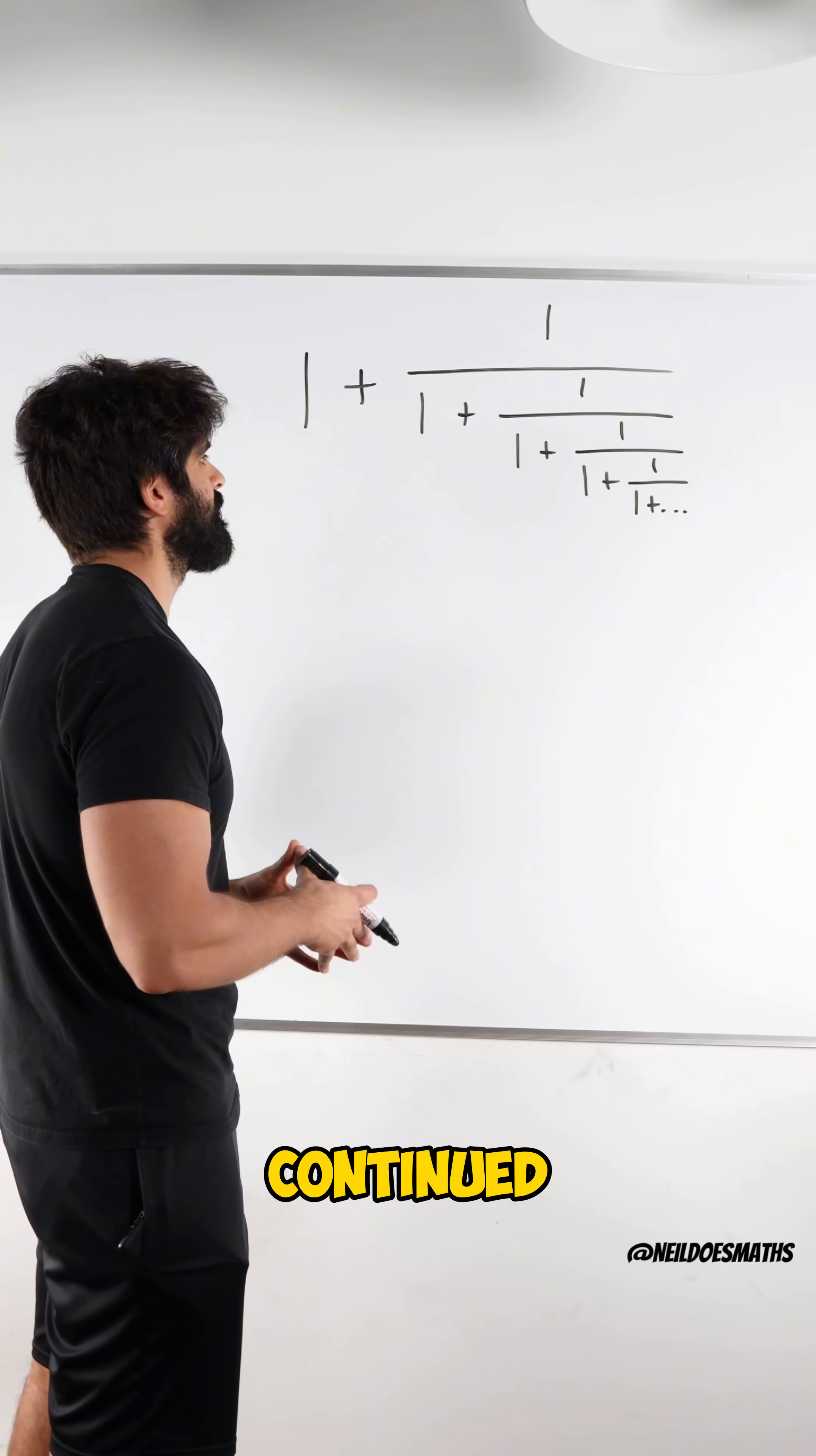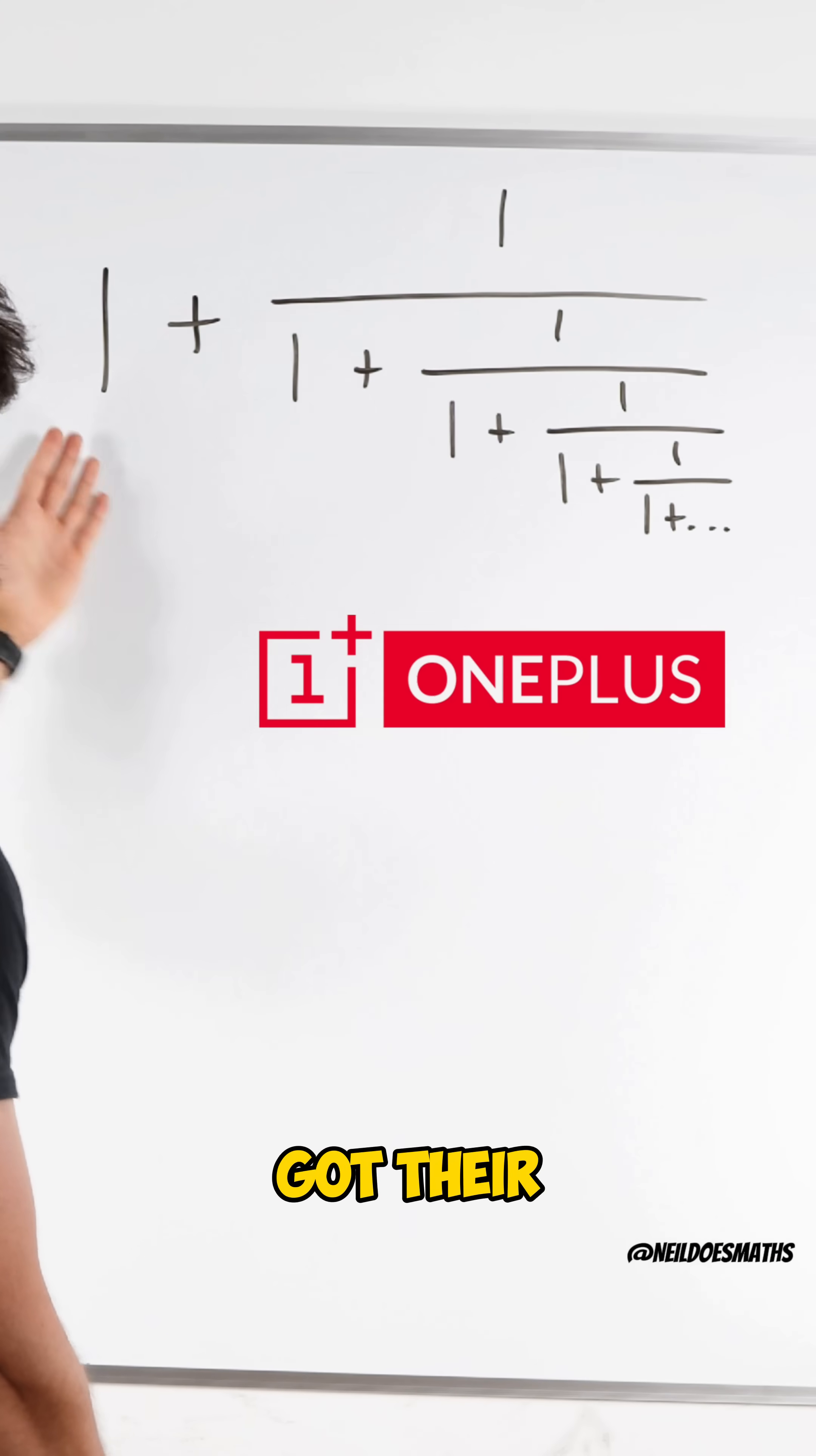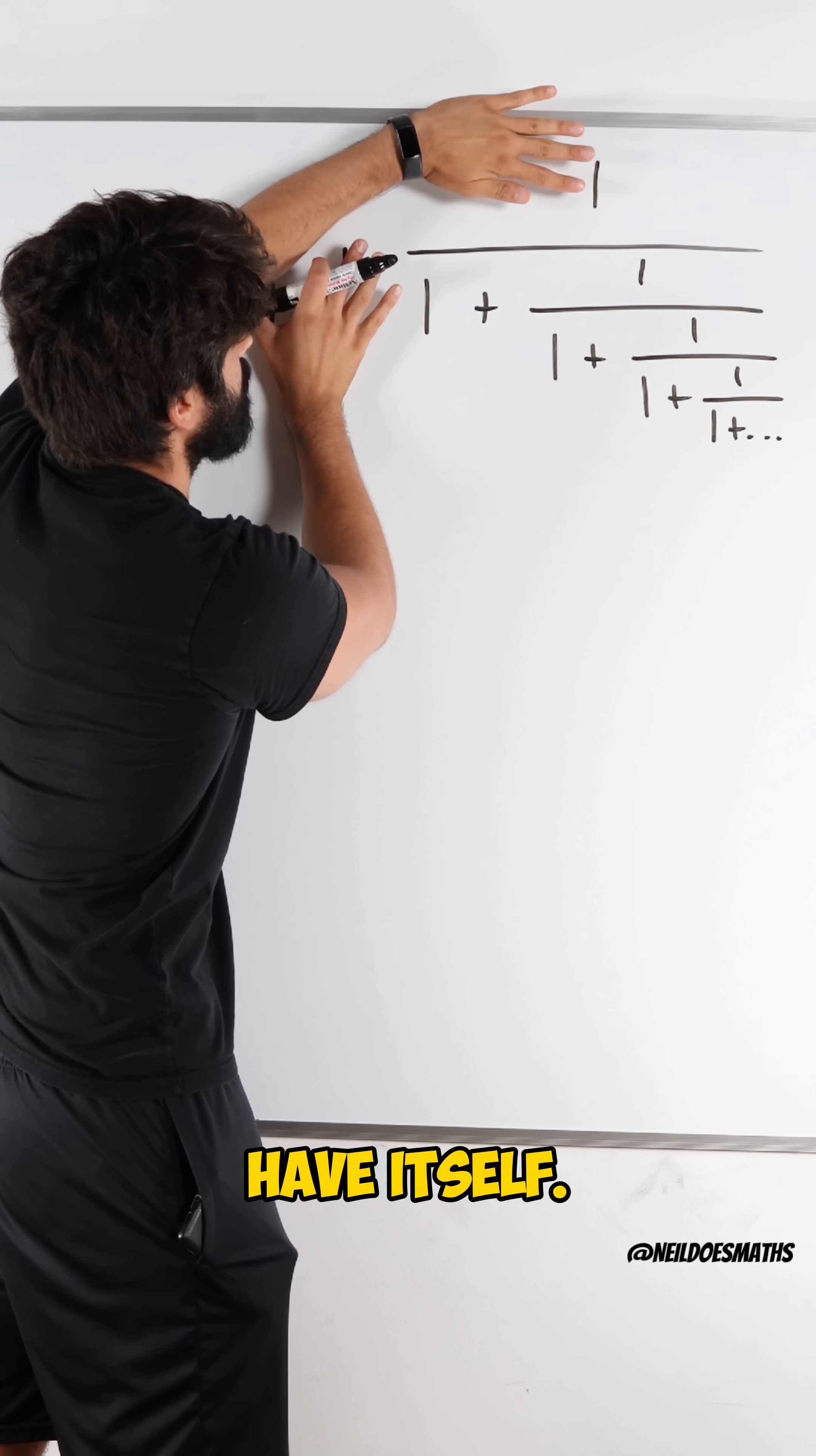Now, in this classic continued fraction, we see 1 plus 1 over 1 plus 1 over 1 plus 1 over 1 plus, etc. I'm wondering if that company OnePlus got the inspiration from this. But we notice that within this fraction, we basically have itself.